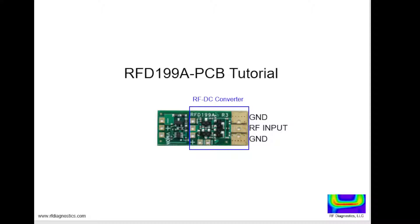The RFD199A PCB is a compact design that is 30 millimeters by 12 millimeters on a 0.8 millimeter thick printed circuit board.